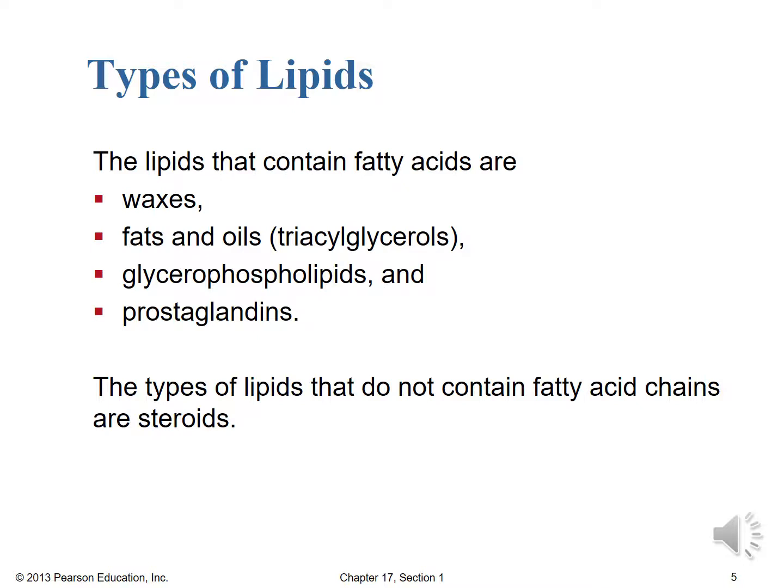Even within those two types, we have different subtypes of lipids. Among those with long-chain fatty acids, we can have waxes, fats and oils (triglycerols), glycerophospholipids, and prostaglandins — four different types of substances containing long-chain fatty acid-type lipids. The other type, those that don't contain fatty acid chains, would be our steroids, which tend to be either cholesterol or the steroid hormones.